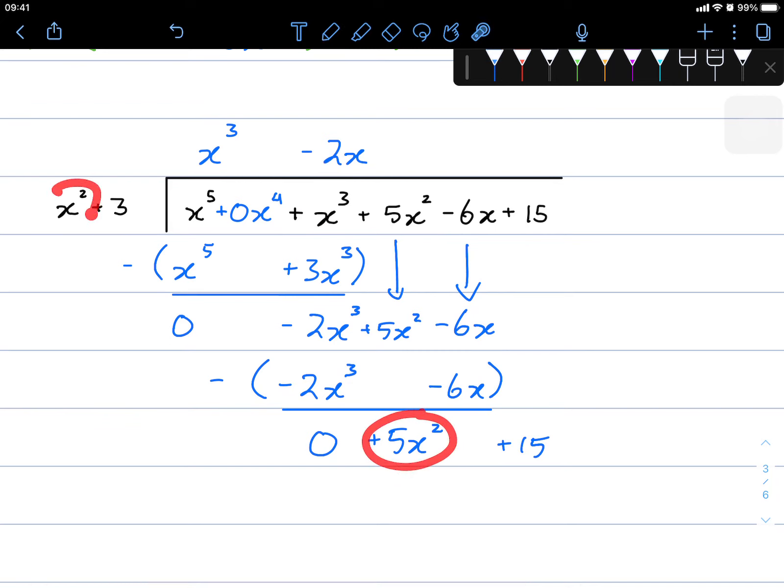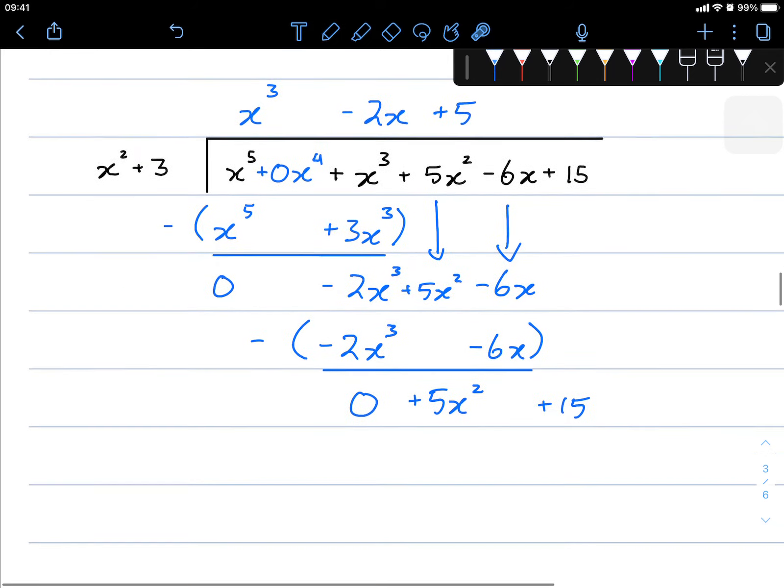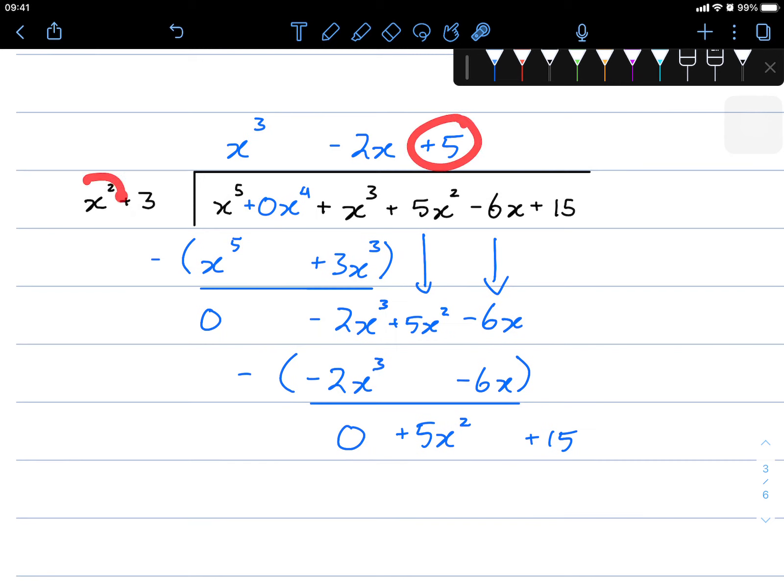This divided by x squared is just plus 5. And then we continue with our multiplication. 5 times x squared. 5x squared. 5 times 3 is 15. Notice how I'm always writing it underneath the like terms.